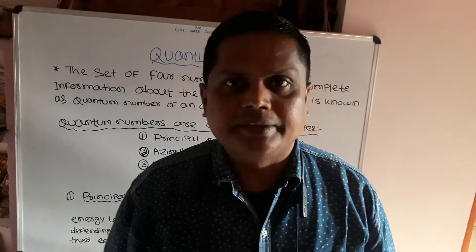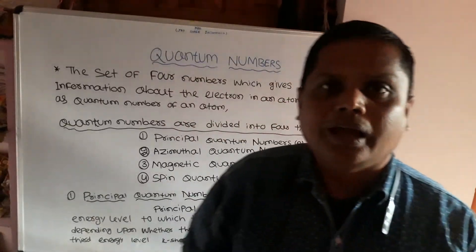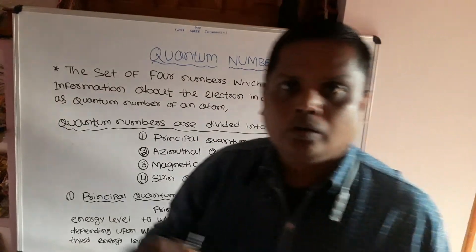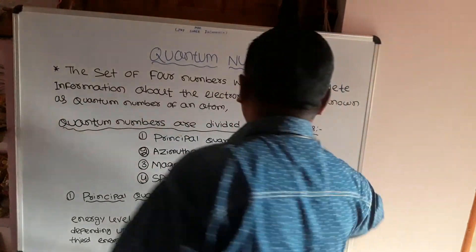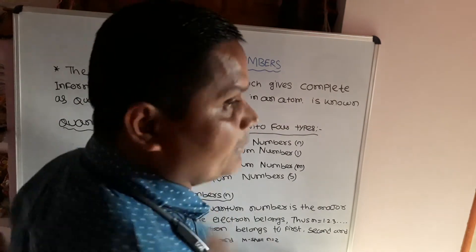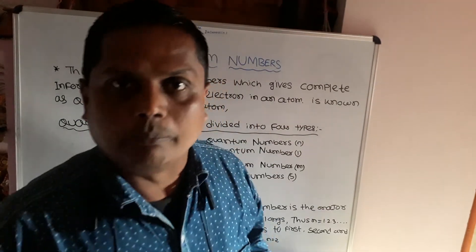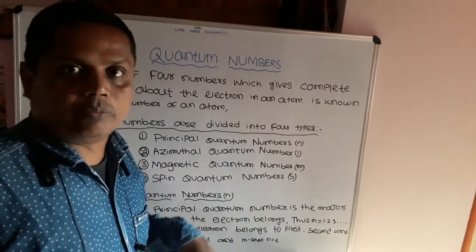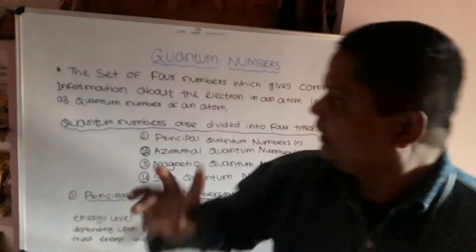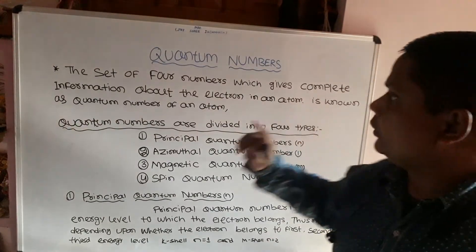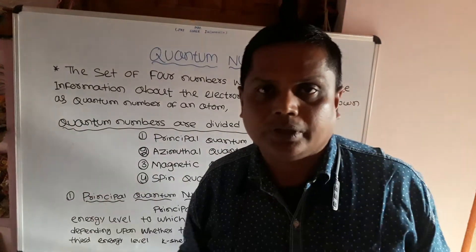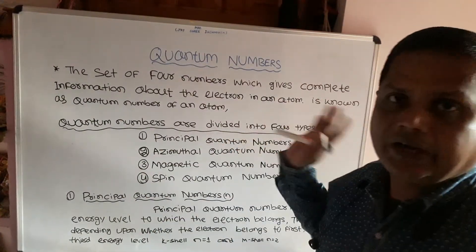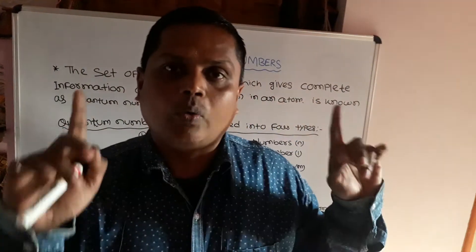Hi friends, welcome to my channel. Today I am going to discuss about the quantum numbers. The set of four numbers which gives complete information about the electrons in an atom is known as the quantum numbers.